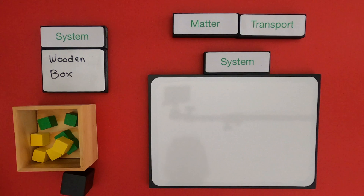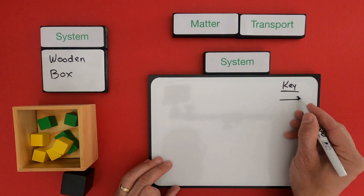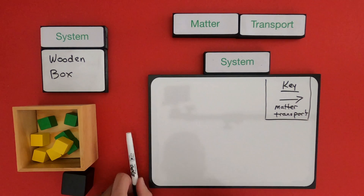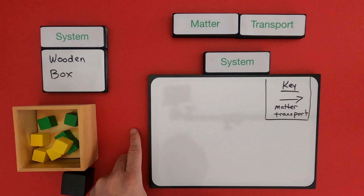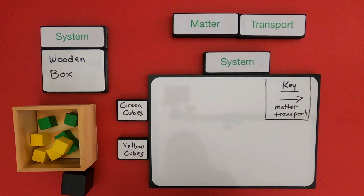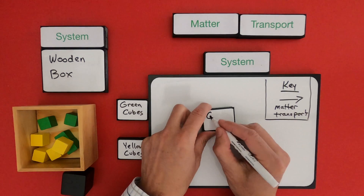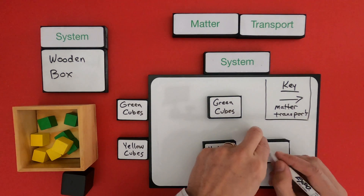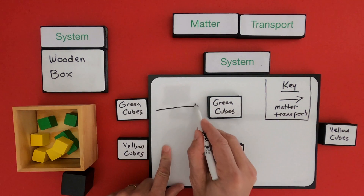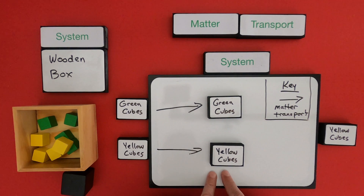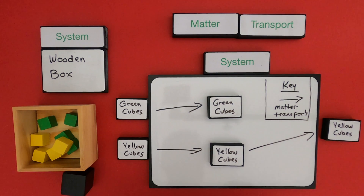The first thing I would do is write down a key that's going to show or explain how matter is transported. In these videos that arrow represents a cause, but in this case that arrow is going to represent matter being transported. I want to write down what is the matter that went into the system. Matter that was outside the system were the green cubes and the yellow cubes. Next I'm going to write down what ended up in the system itself, and then finally what's actually leaving or coming out of the system. The green cubes went into the system — that arrow represents matter transport from outside into the system. The yellow cubes are also going into the system.